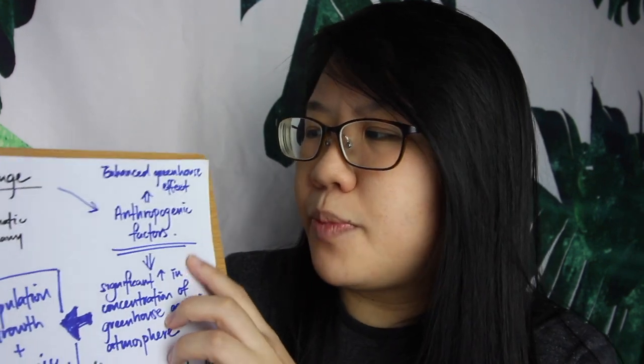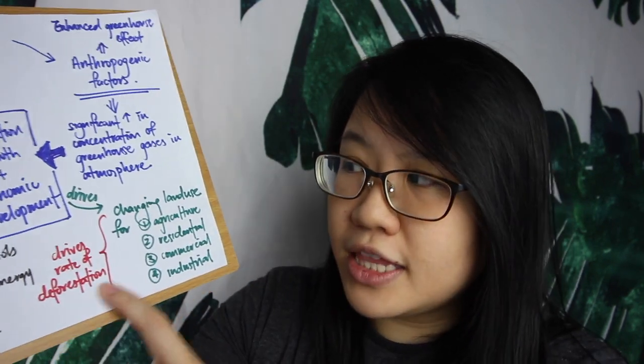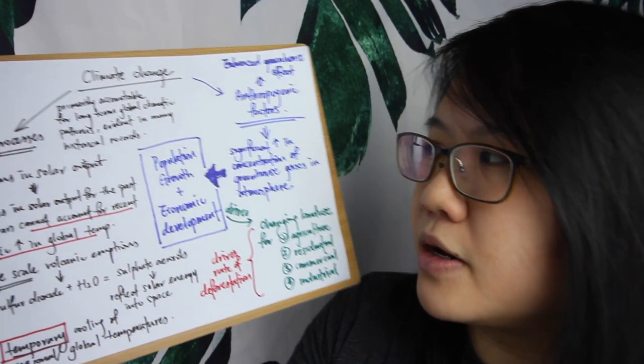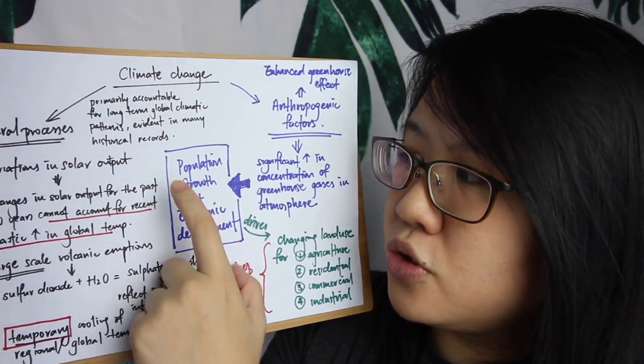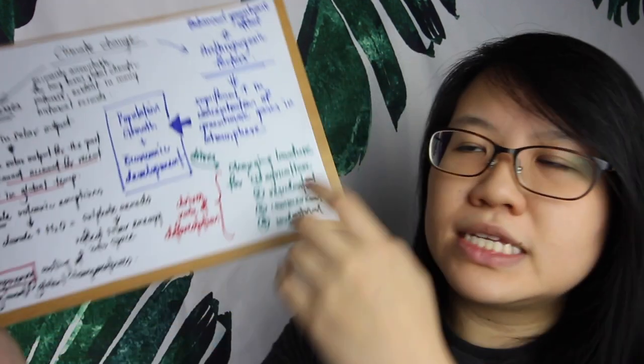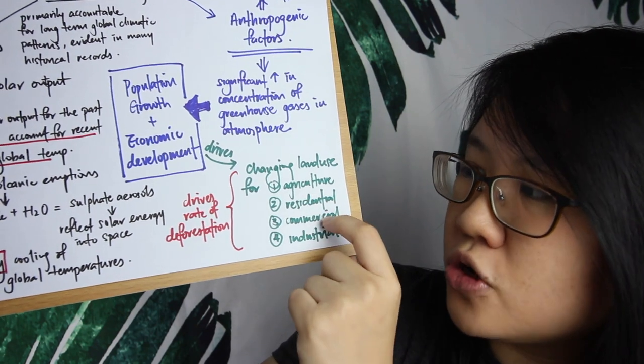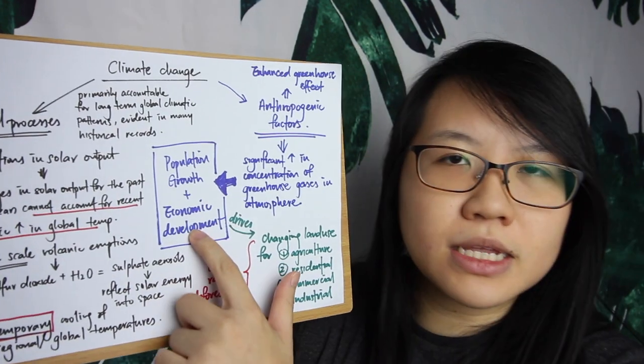When you unpack anthropogenic factors, the textbook focuses on deforestation and changing land use. Before reading through it, ask yourself: what are the main causes for deforestation and land use change in the first place? It boils down to two main points: population growth and economic development. By 2050, the world's population will increase to 10 billion. With more people, demand for resources increases, driving deforestation to make space for agricultural, residential, commercial, and industrial uses.